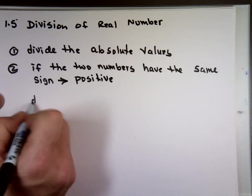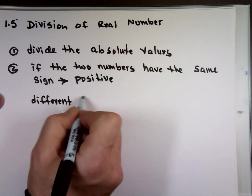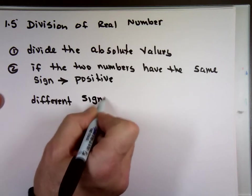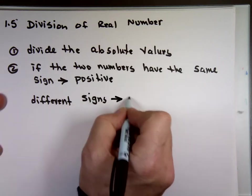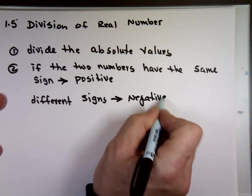And if they have different signs, the result is what? Negative. So there is no new rules here. Same set of rules.